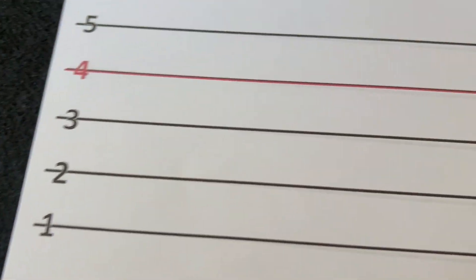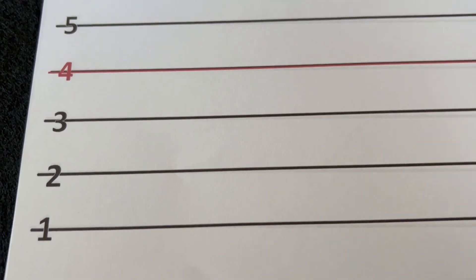So we have a staff and staff has five lines. One, two, three, four, five.